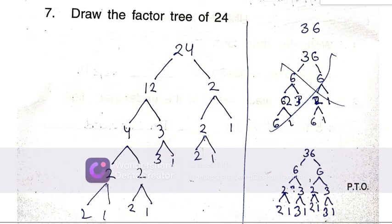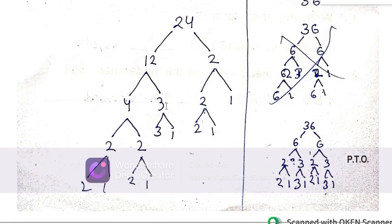Factor tree of 24: 12 times 2 equals 24, so 1 times 12, 2 times 6, 3 times 8, 4 times 6. Up to 1 you have to do the factor tree.